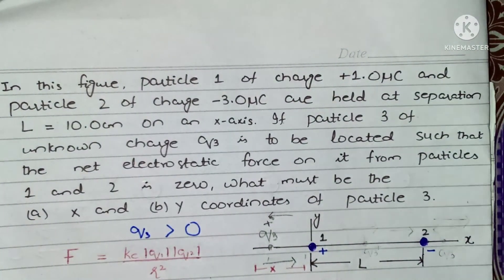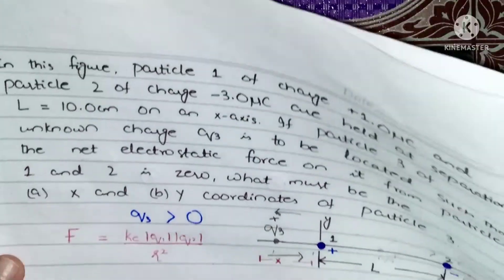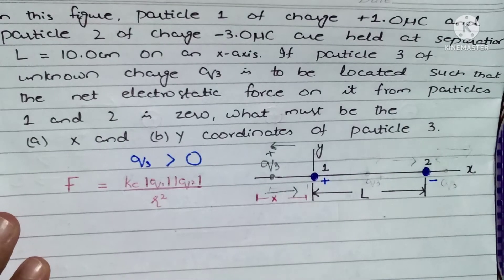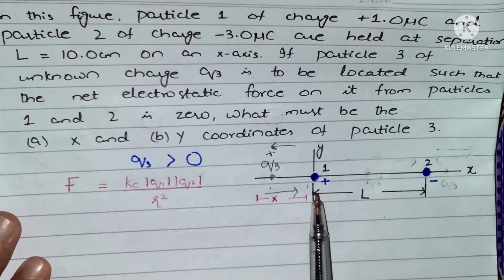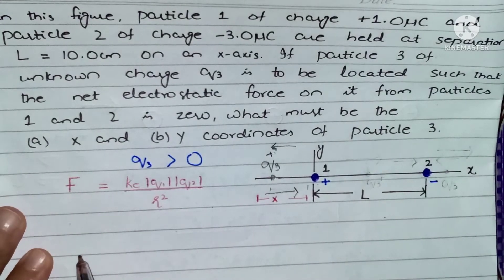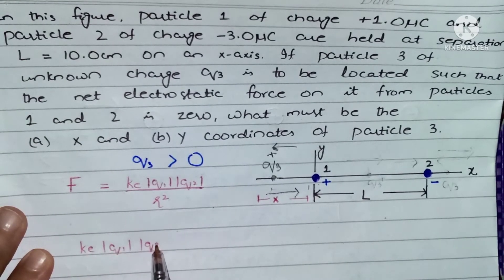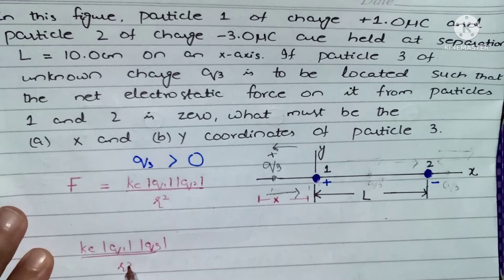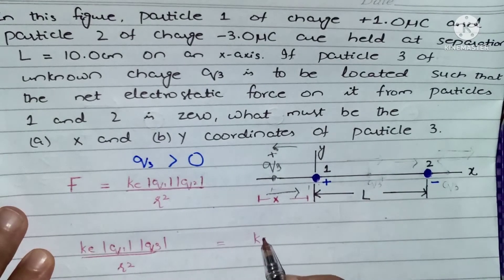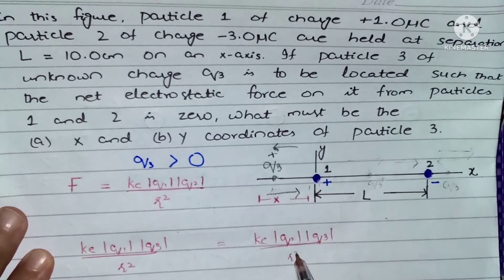We apply Coulomb's law: F = k·q1·q2 / r². To get net electrostatic force zero, we equate both forces — the force between q1 and q3, and the force between q2 and q3. So we write: k·q1·q3 / r² = k·q2·q3 / r².